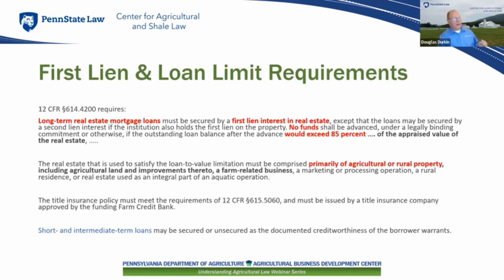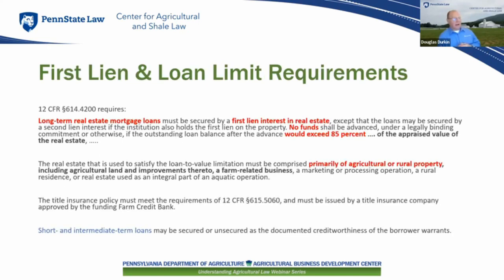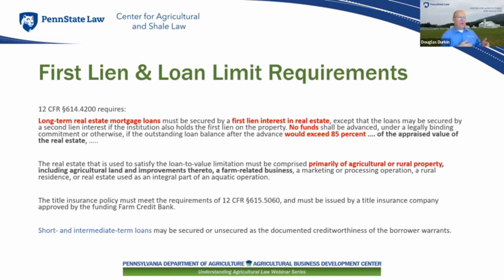Our Federal Land Credit Association real estate secured liens must also be first liens pursuant to the regulation cited. First lien and loan limit requirements: the regulation requires our FLCA loans to be secured by a first lien in real estate, and no funds shall be advanced that would exceed 85% of the appraised value. The land must be comprised primarily of agricultural or rural property.